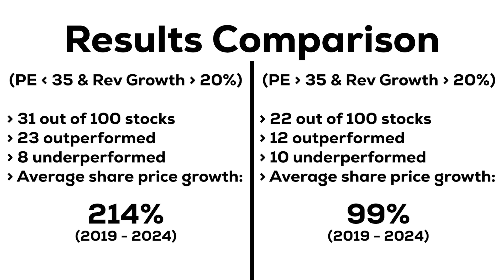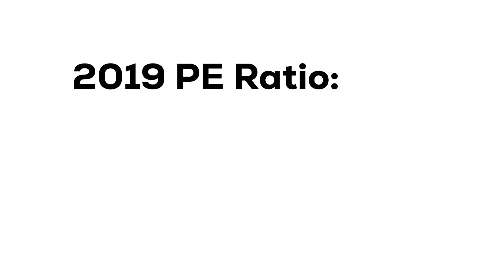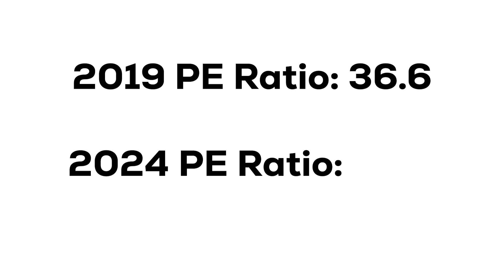So in this instance, it's pretty clear that using the P/E ratio in conjunction with another indicator can help us find some good investments. But how can we apply this logic now? Because what was true five years ago isn't necessarily true today. For example, the average P/E ratio for those 100 companies back in 2019 was 36.6, whereas today the average P/E ratio for the same 100 companies is 44.3.